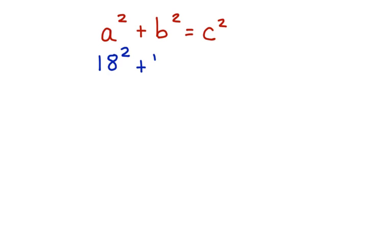We don't know side B, so let's leave that as B squared. And we know that the length of the ladder, which is the longest side, is 30 squared.